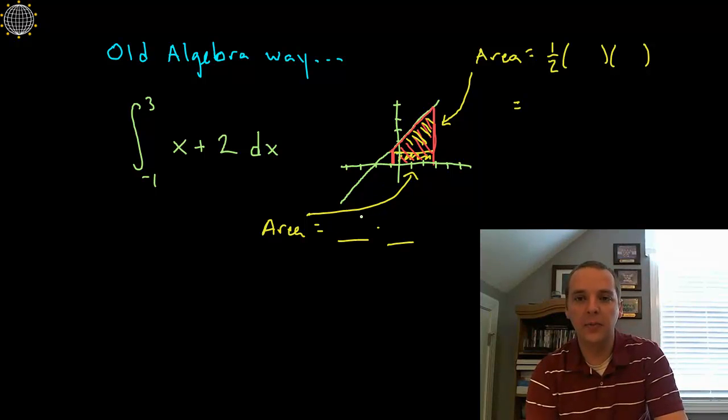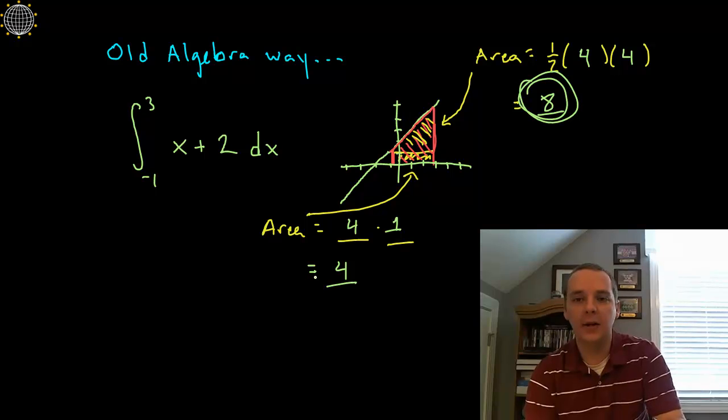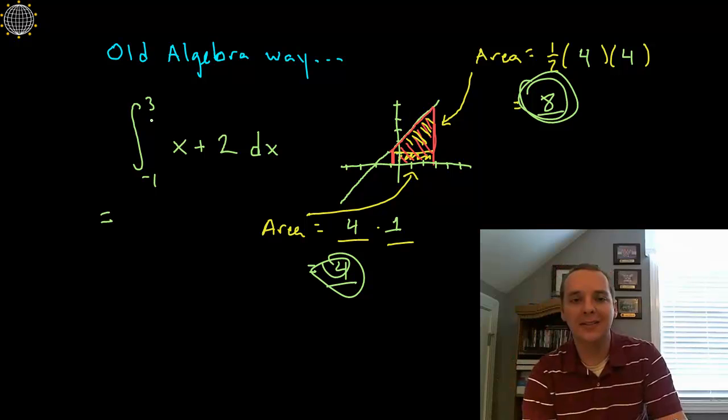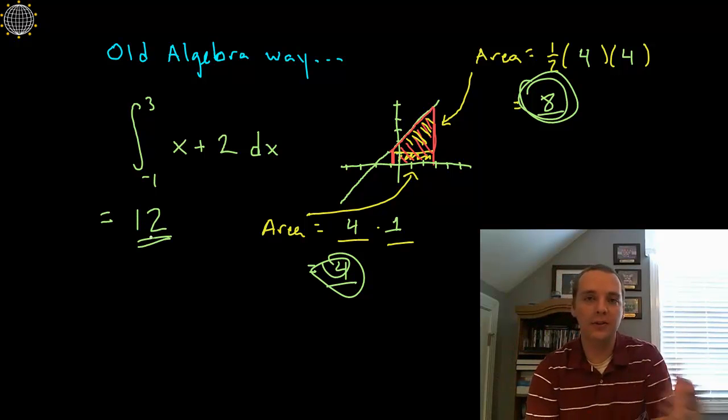The area of this rectangle on the bottom would be the width, which is 4 from minus 1 to 3, that's a distance of 4 units, times its height, which if you notice this has a height of 1. And then the area of the triangle would be 1 half base times height. Again the base is 4 and the height, if you look at this triangle, the height is also 4. So this would give you 1 half times 4 is 2, 2 times 4 makes 8, and 4 times 1 is 4. So if you add 8 and 4 together, the area of the triangle and the rectangle together, we would see that this definite integral again has an area of 12, the same as what we got before.